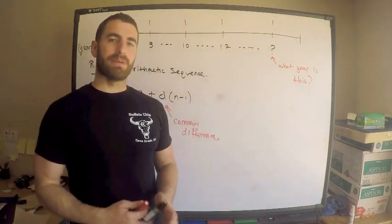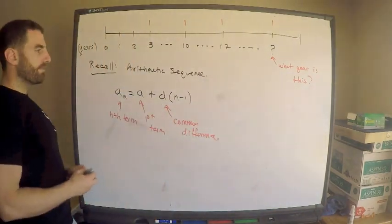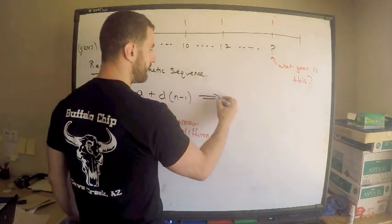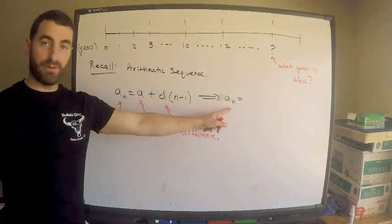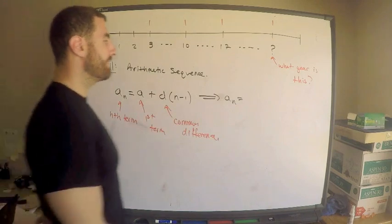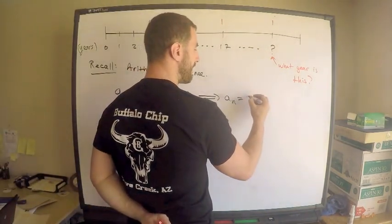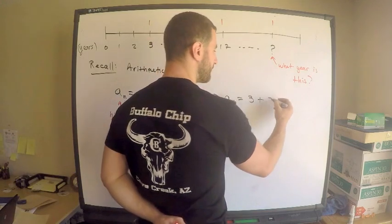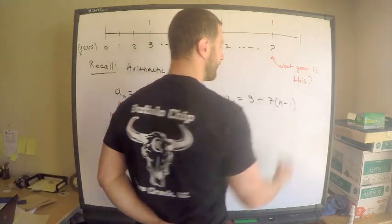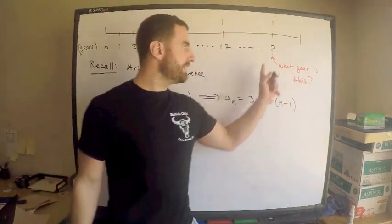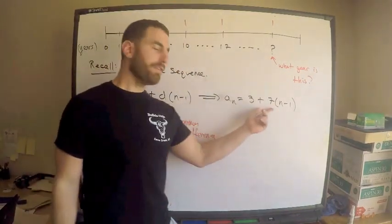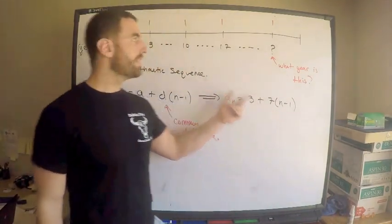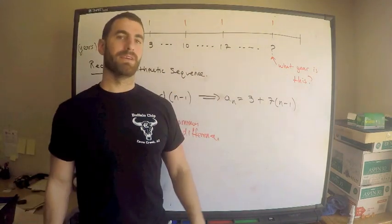So the nth term is equal to the first term plus the common difference times n minus one. This just gives you the terms of an arithmetic sequence. What is my first term in terms of the years in which I made payments? For our case, the nth term is given by the first term, when is my first payment made, three. What is the common difference? Seven. Times n minus one.